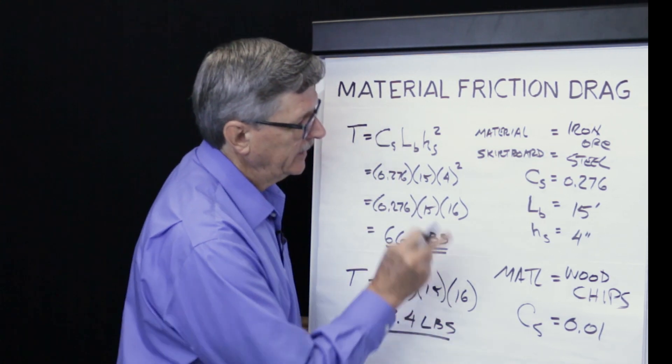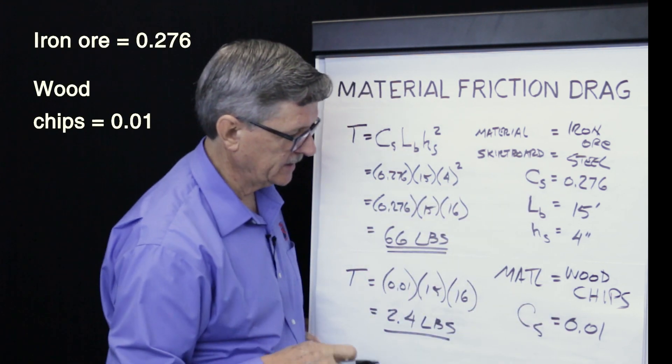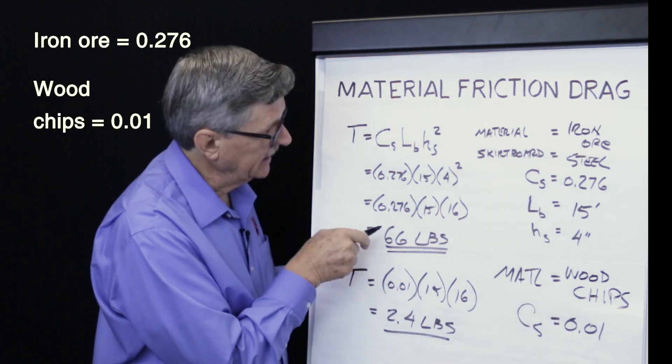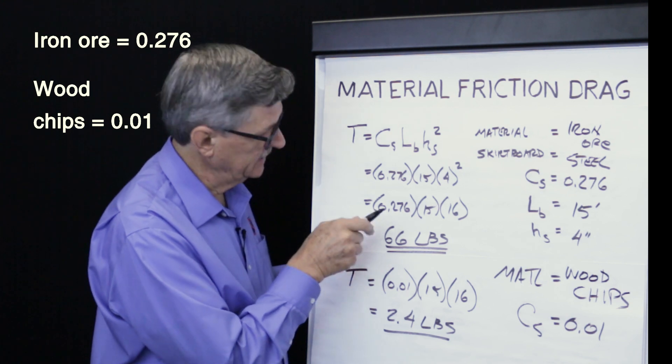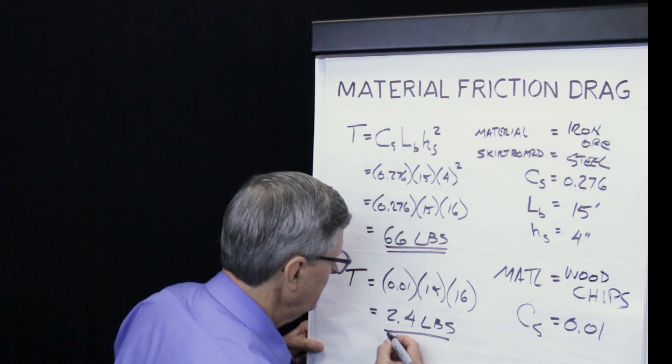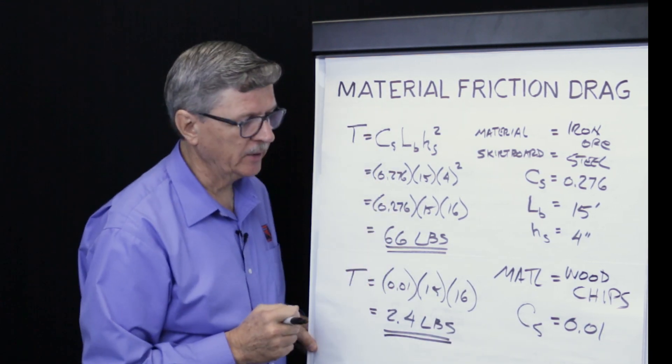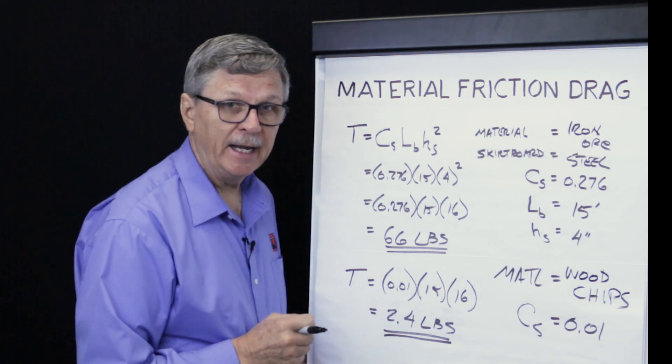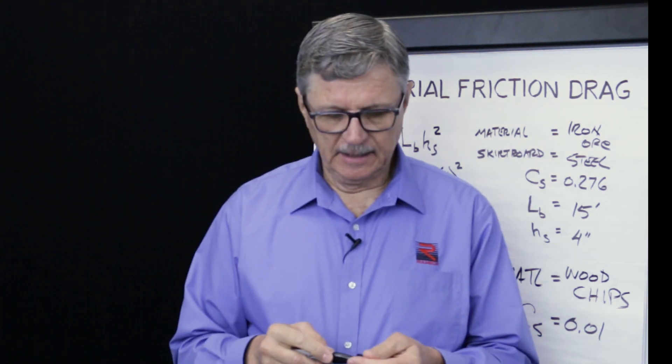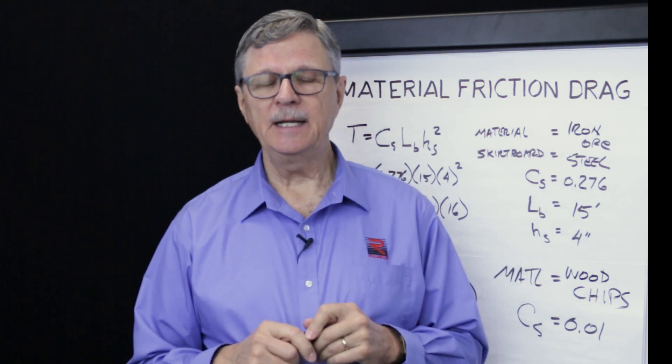This yields a result of 2.4 pounds. Notice that the frictional coefficient of iron ore is 27.6 times higher than that for wood chips. Therefore, the drag is 27.6 times higher, 66 pounds compared with 2.4 pounds. So now we've been able to calculate one of the two components of the skirt board system drag. CEMA gives a list of frictional coefficients to make it convenient to do this analysis.